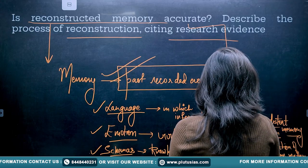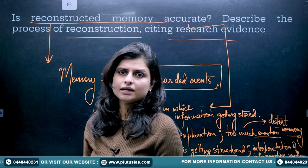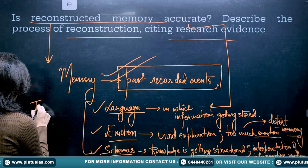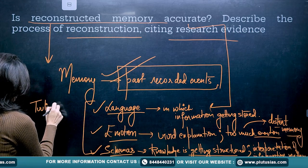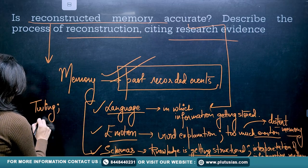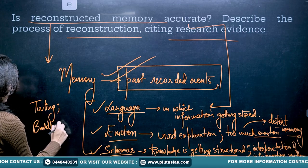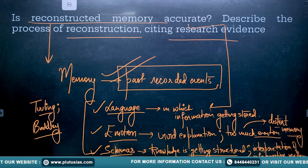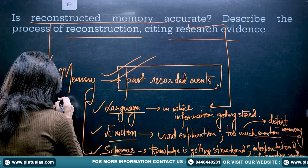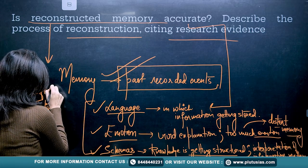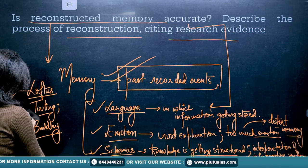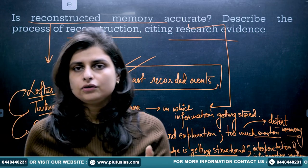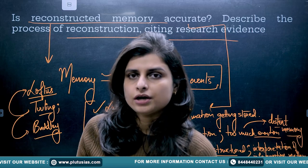You are going to cite research evidence — you can talk about the research of Bartlett, you can also talk about the research of Bartlett, and other than that you can talk about the studies and research done by Loftus. It's your choice which researchers you prefer to quote; I've just mentioned three, but you can actually quote more than five of them.